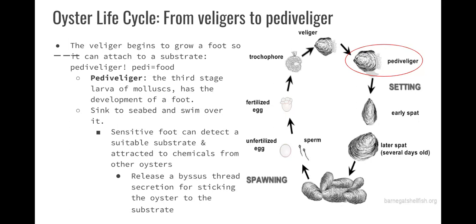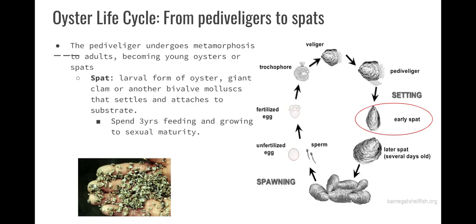The pediveliger undergoes another metamorphosis to become a spat — young oysters. A spat is the larval form of an oyster, a giant clam, or another bivalve mollusk like a mussel. When they settle and attach to a substrate, the spat is what is attaching. They spend three years feeding and growing into sexual maturity before they're big enough and have enough energy to create gametes. So the larval stages go: trochophore → veliger → pediveliger (which has the foot) → spat → sexually mature adult.